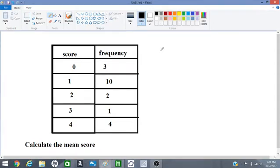Let us calculate the mean score given this ungrouped frequency distribution. We need to add in a column here. So let's go ahead and add in that column.